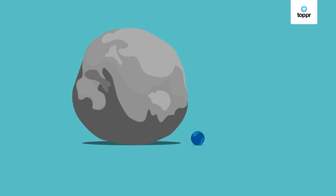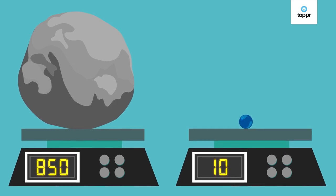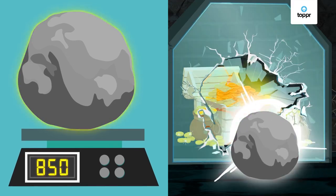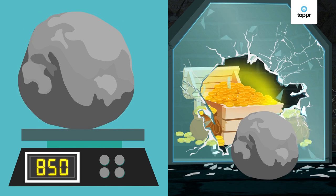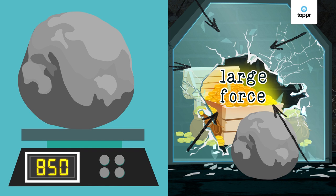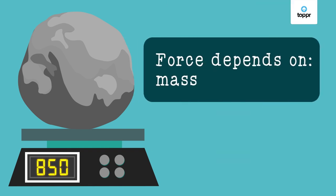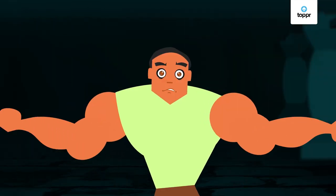An obvious difference between the marble and the rock is that they have different sizes. To be precise, they have different masses, and the heavier rock is the one that is able to break the glass because it applies a larger force on the wall. What you've just figured out is that the force applied by an object depends on its mass. So using the rock, the glass will break easily and your rival might win.